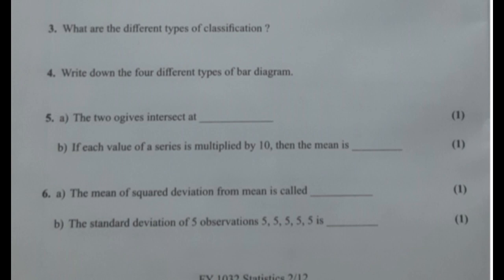The point of intersection of the two ogives gives the midpoint of the distribution. The x-axis point of intersection gives the median. The y-axis point of intersection gives the value of the number of observations. To find the median, half of the number of observations is correct.